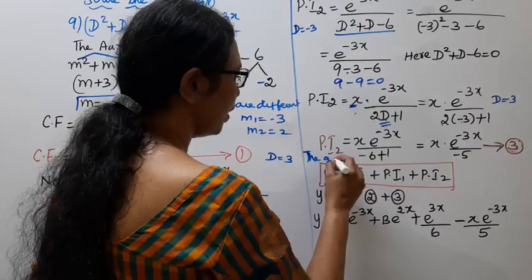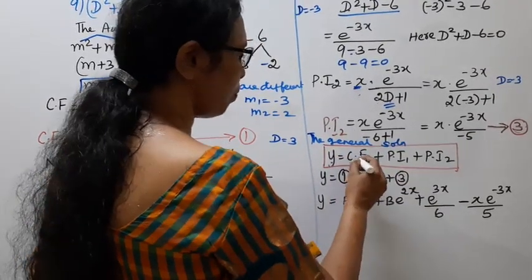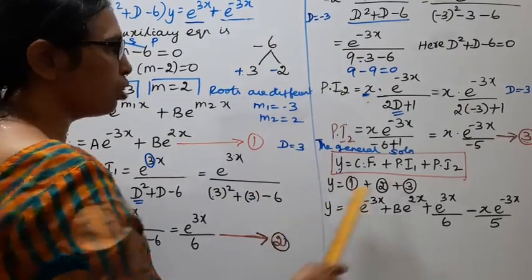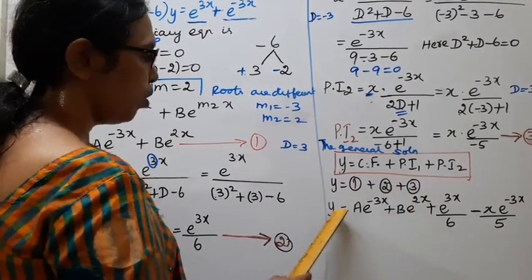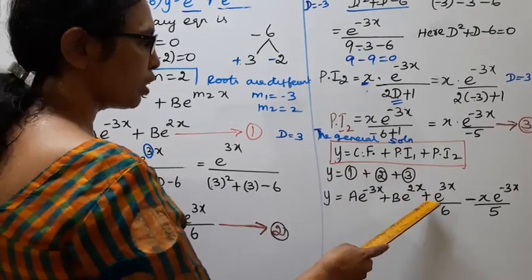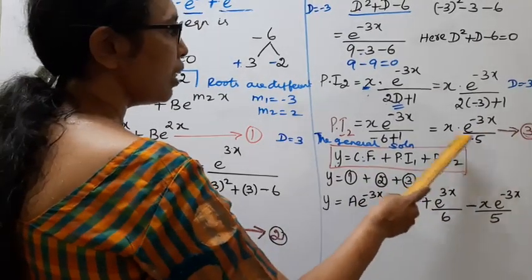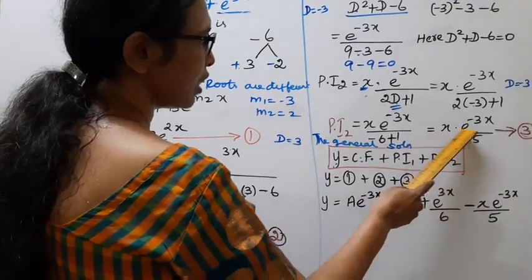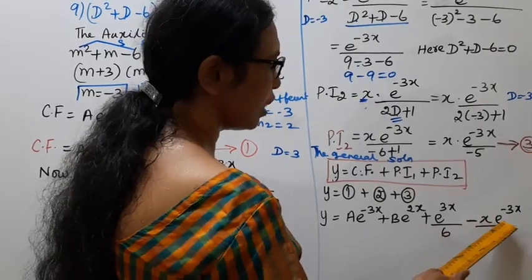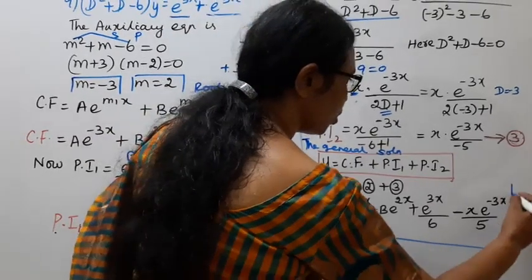The general solution is y = complementary function + particular integral 1 + particular integral 2. Therefore y = ae^(−3x) + be^(2x) + e^(3x)/6 − x·e^(−3x)/5. This is the general solution.